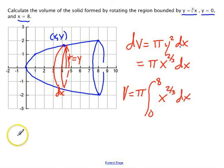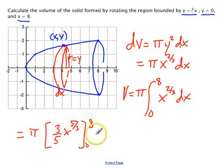So my volume is going to equal pi times the integral from 0 to 8 of x to the 2 thirds dx. And this becomes a pretty simple problem. So that's going to be pi, and we're going to do 3 fifths x to the 5 thirds from 0 to 8,